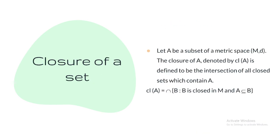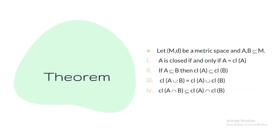We have defined closed ball and closed set. Now we define the closure of a set. The closure of A, denoted Ā, is defined as the intersection of all closed sets which contain A. Compare this with the interior, which is the union of all open sets contained in A. Key theorems: A is open if and only if Int(A) = A; A is closed if and only if Ā = A. If A is a subset of B, then Ā is a subset of B̄. The closure of A ∪ B equals Ā ∪ B̄, and the closure of A ∩ B is contained in Ā ∩ B̄.